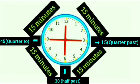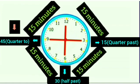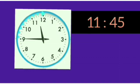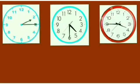Students, when the minute hand is at 9 — which means 45 minutes — to tell the time of 45 minutes we use the word 'quarter to.' The minute hand is pointing to 9 and the hour hand is closer to 12, and the time is 11:45. For 45 minutes we use the word quarter to, so the time is quarter to 12, meaning 15 minutes to 12.